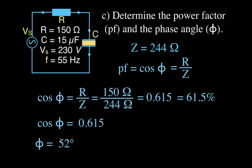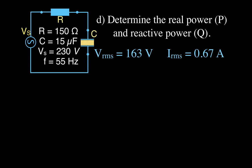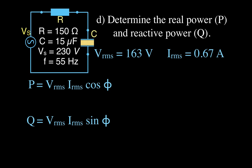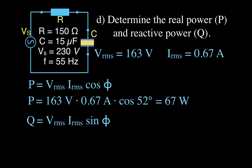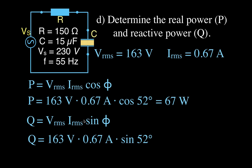Now we'll do part D — determining the real power and reactive power. Real power P equals V-RMS times I-RMS times the cosine of the phase angle: 163 volts times 0.67 amperes times cosine of 52 degrees gives us 67 watts. For the reactive power Q, we use V times I times the sine of the phase angle, and we get 86 VAR.